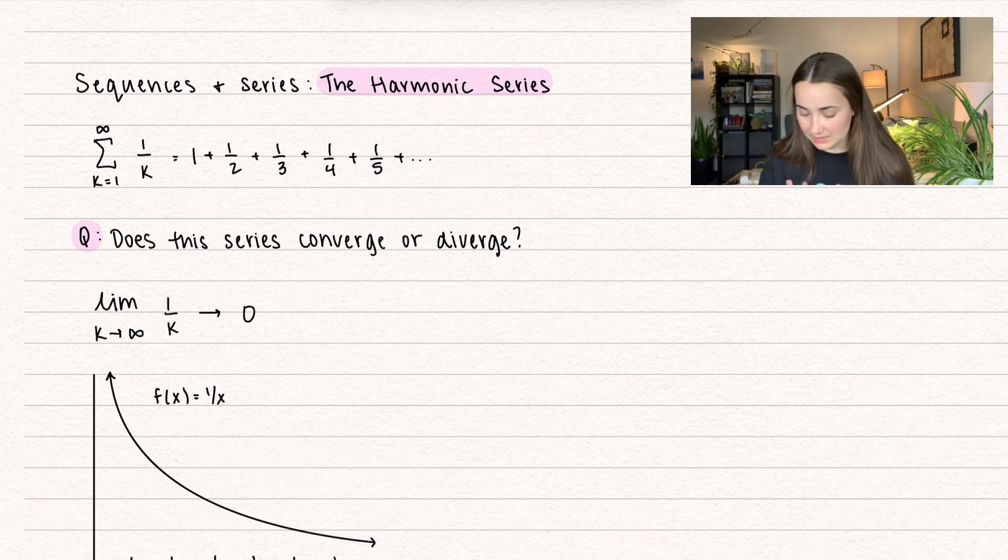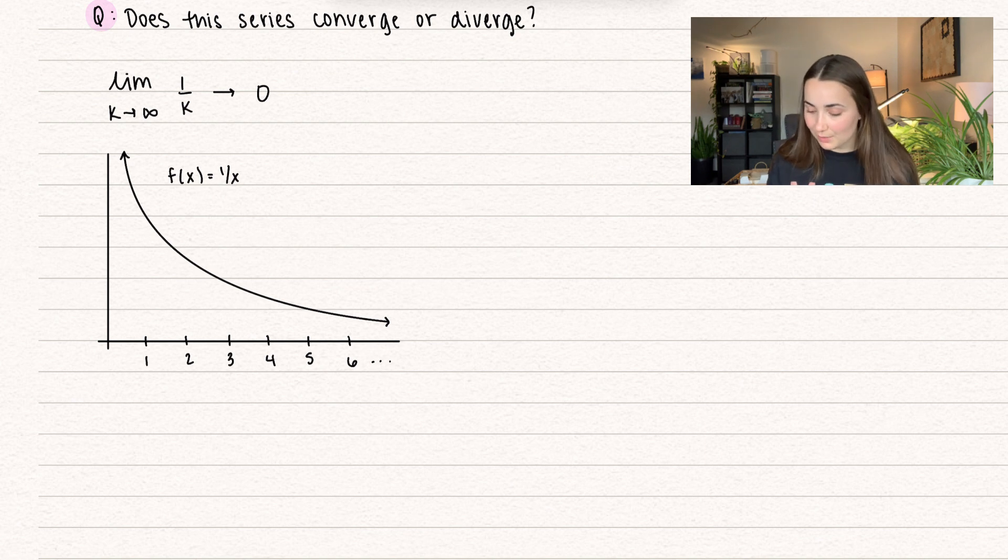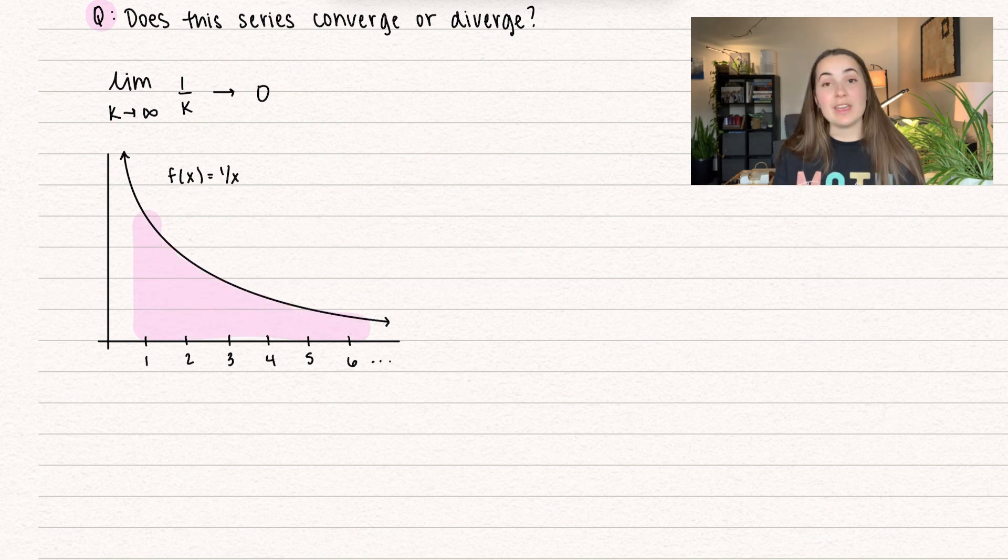Let's take a look at it from a different perspective. Here we have the function 1 over x. So here we can actually integrate the area of this function. So the area is going to be everything underneath the curve, and we can find this area by using the integral.